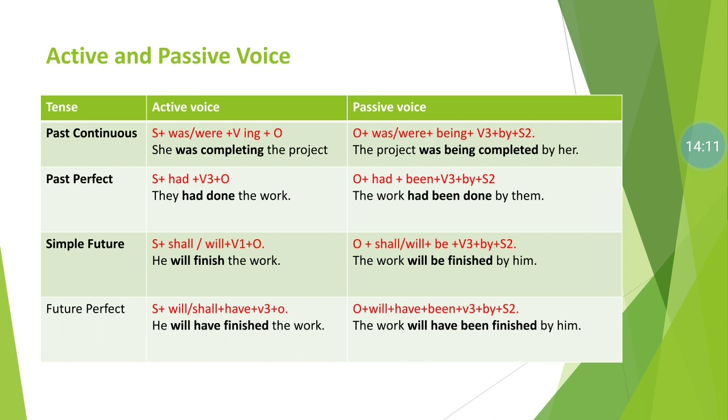Past perfect continuous tense cannot be changed from active to passive because we do not have any supporting or extra helping verb available for the transformation.